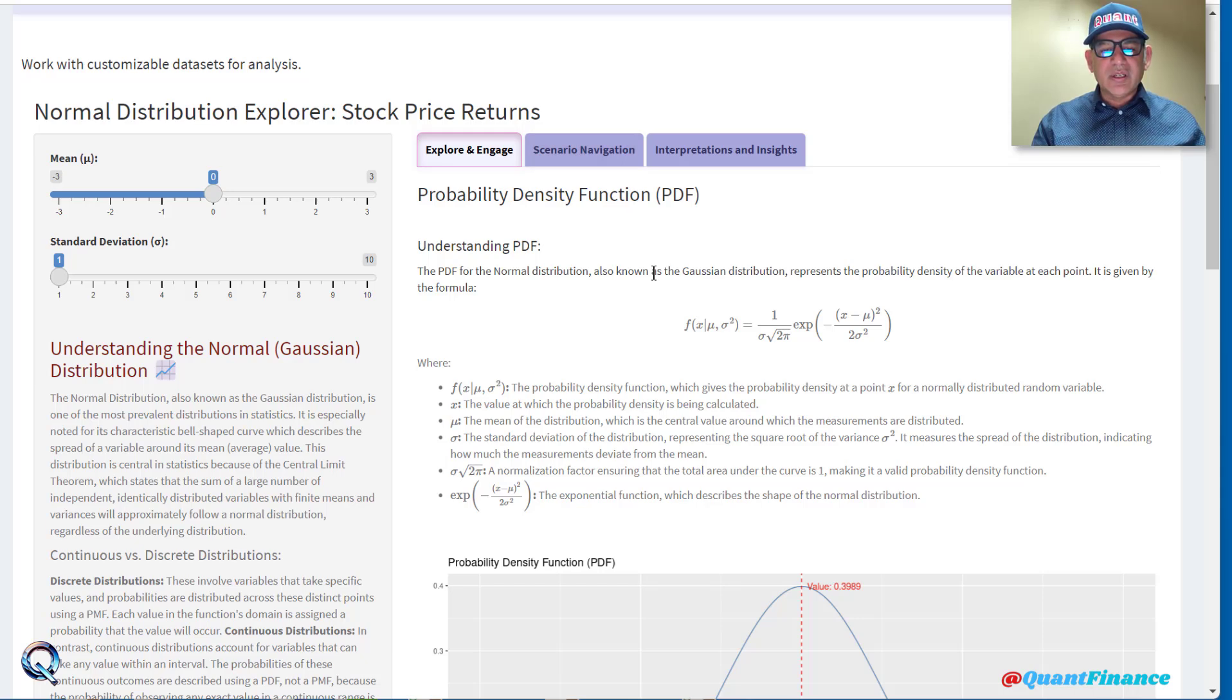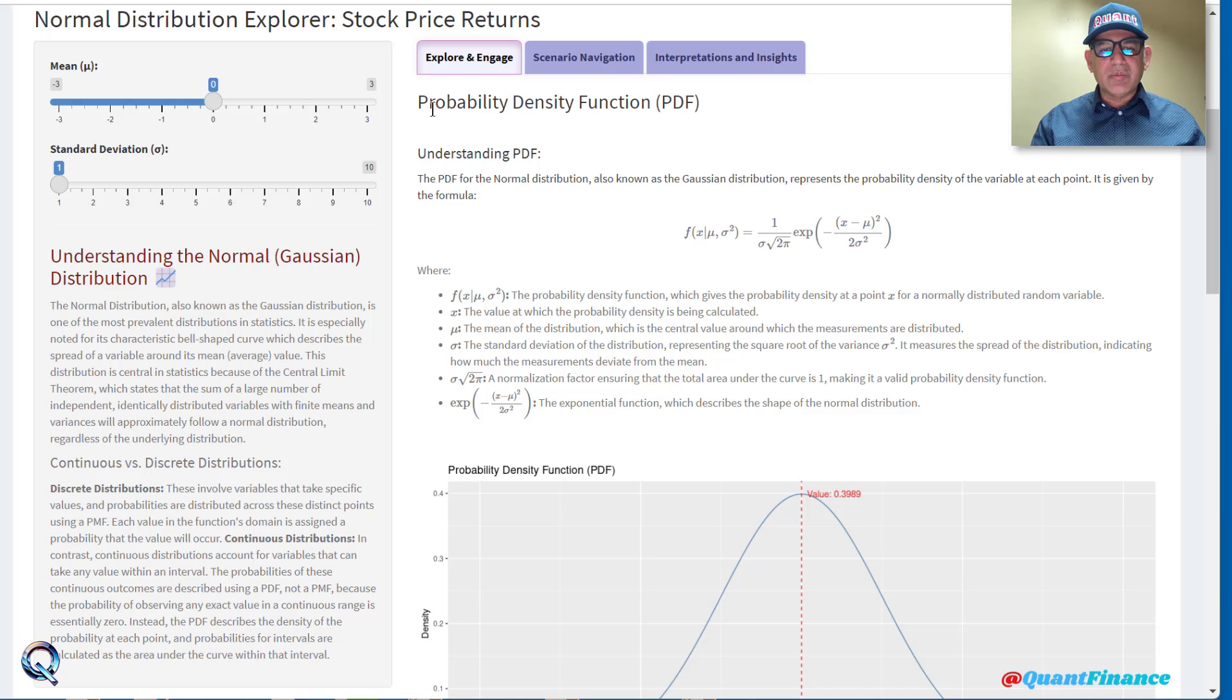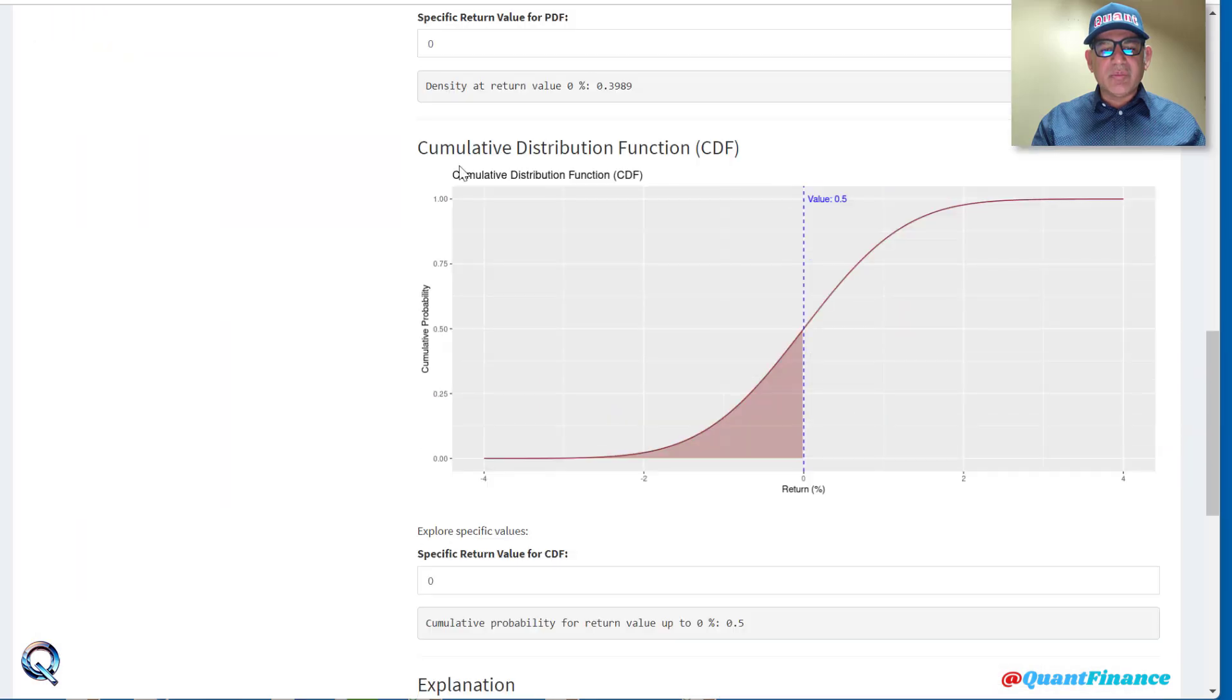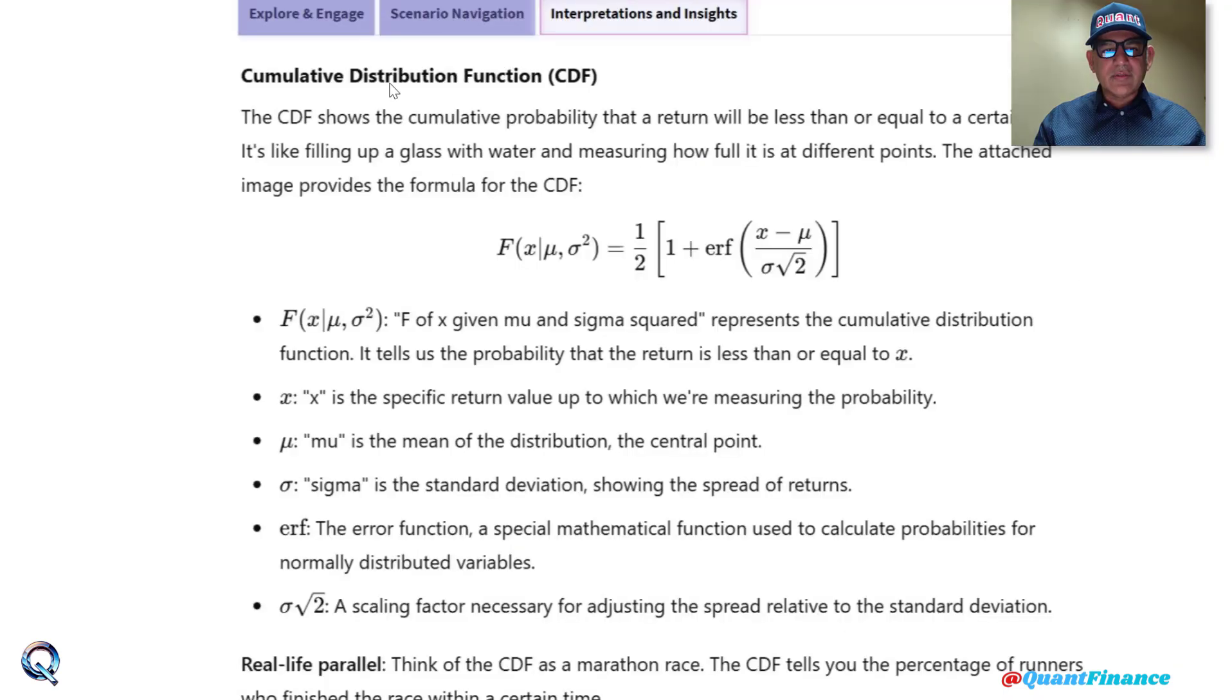In the previous learning we talked about probability distribution function, and in this one we will be talking about cumulative distribution function. Let us first understand the cumulative distribution function formula which is given here.